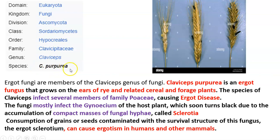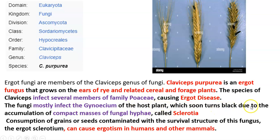Claviceps purpurea is commonly known as ergot fungi. Ergot fungi are members of the genus Claviceps and Claviceps purpurea affects the ears — meaning the florets — of rye. In the florets there are grains enclosed by a husk, which are affected by this fungus. It commonly affects members of the family Poaceae, causing ergot disease. The fungi mostly infect the gynoecium, specifically only the ovary, which normally matures into fruit. That ovary region is completely damaged — its ovules etc. are replaced by this fungus, and the area turns completely black due to accumulation of compact masses of fungal hyphae.